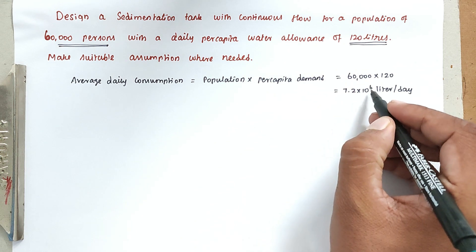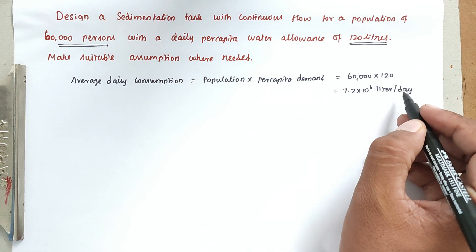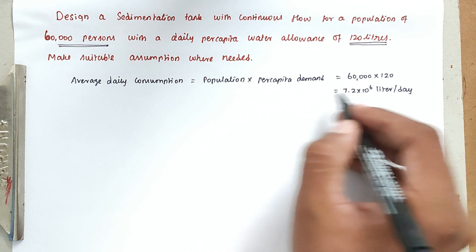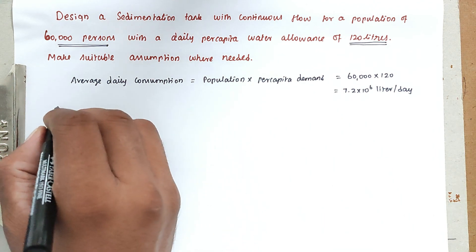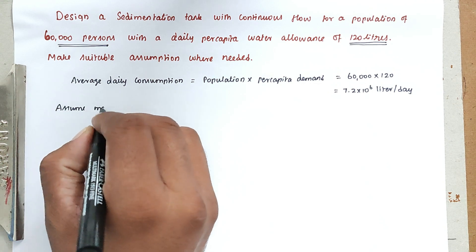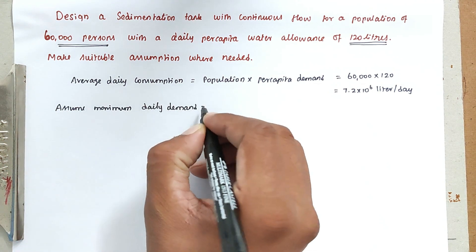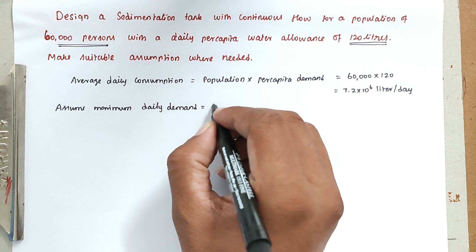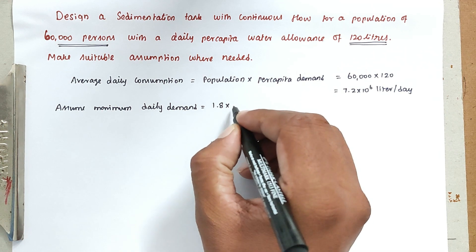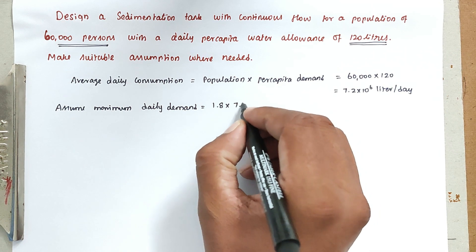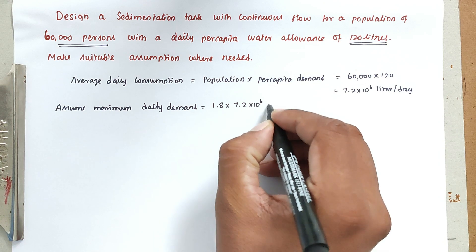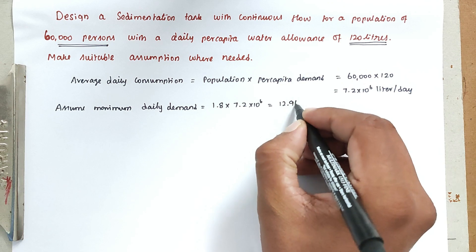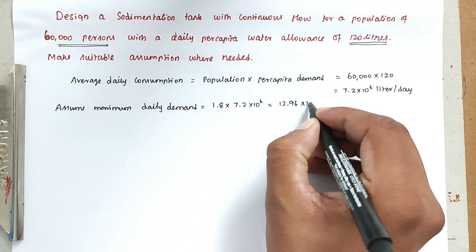We can assume the maximum daily demand is 80% more than the average, so we take 1.8 times the average daily demand of 7.2×10⁶. This gives us a maximum daily demand of 12.96×10⁶ liters.